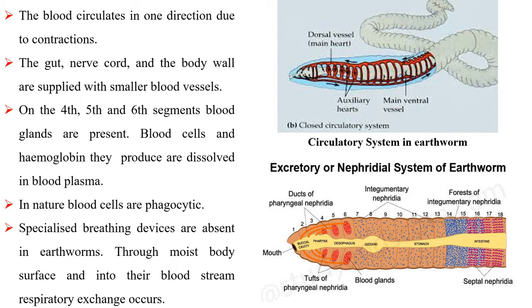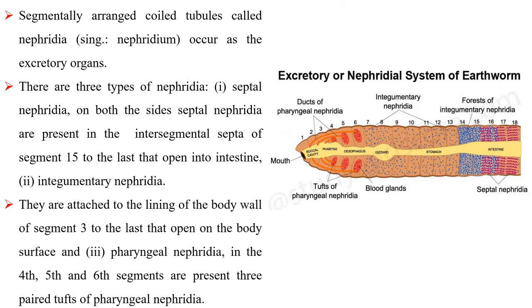Specialized breathing devices are absent in earthworm. Through the moist body surface and into their bloodstream, respiratory exchange takes place. Segmentally arranged coiled tubes called nephridia occur as the excretory organs.